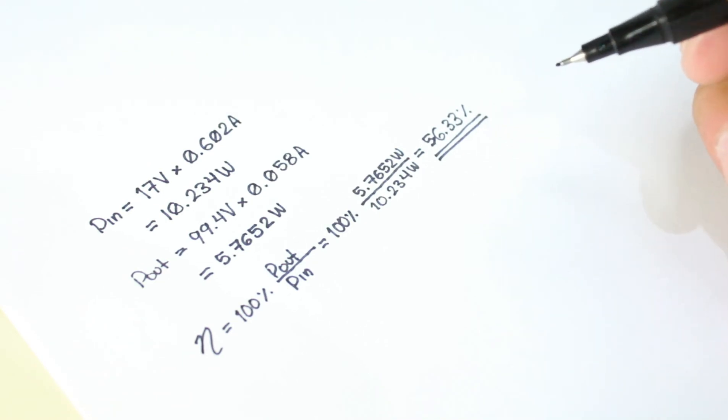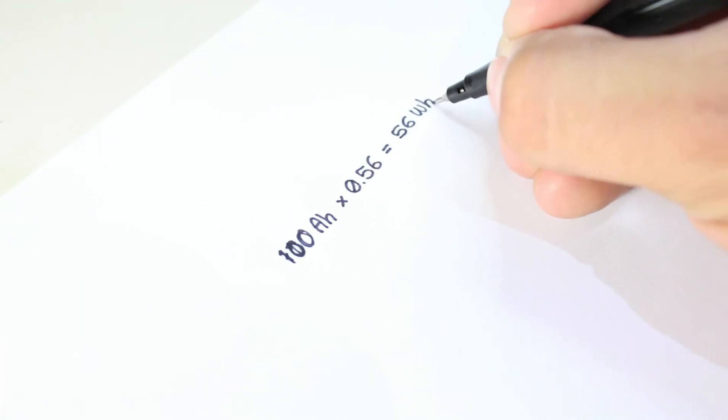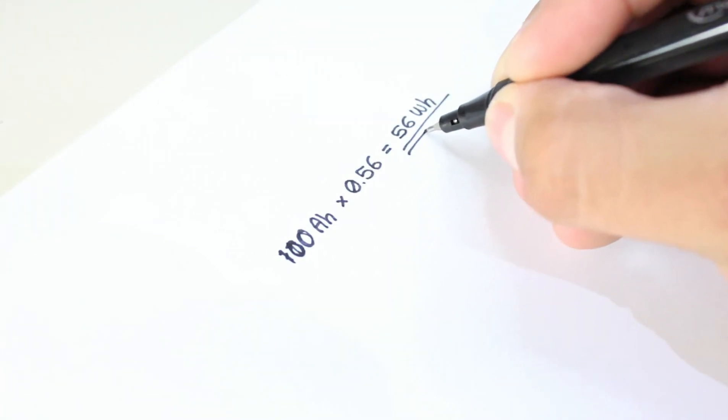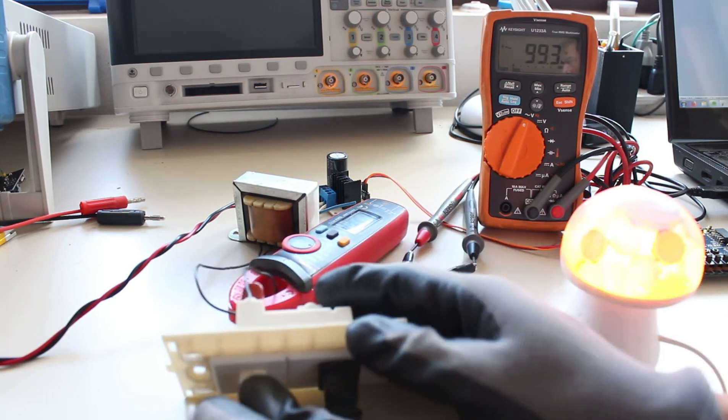That means that, for example, if I use a 100Wh battery to power my inverter, I would use effectively 56Wh as maximum. Nevertheless, I'm pretty happy with the design. It works as I supposed.